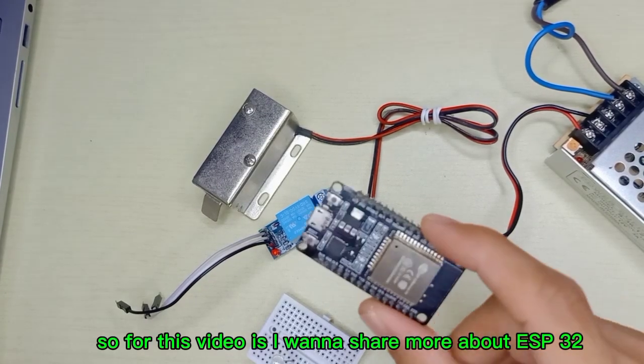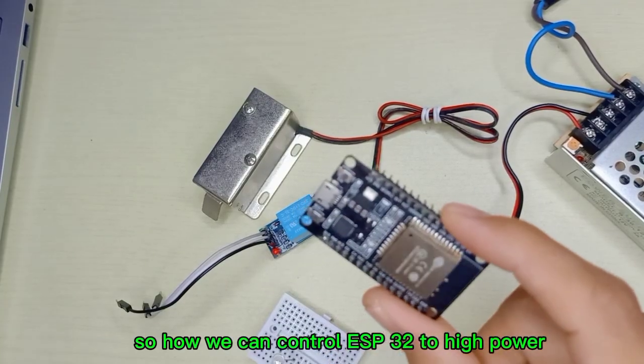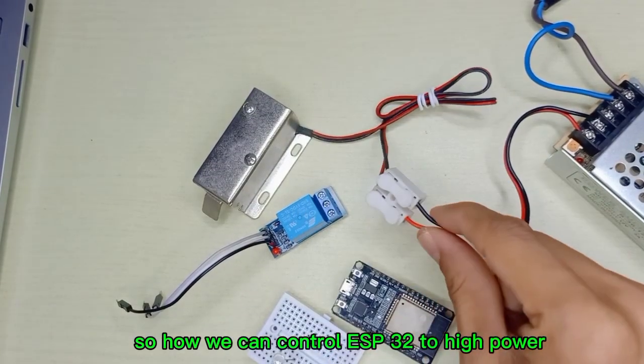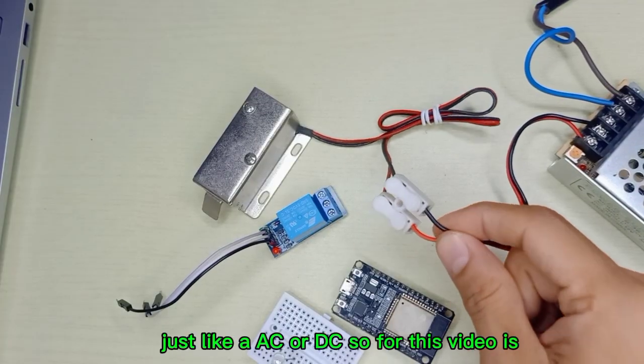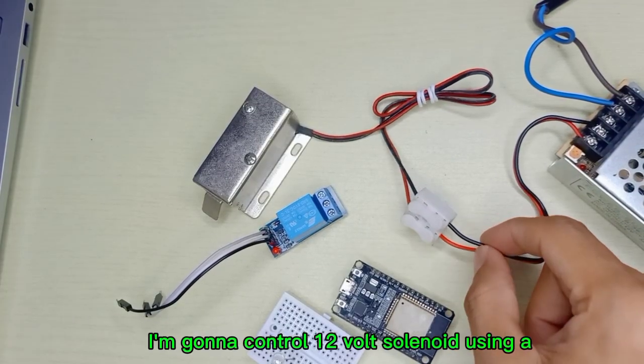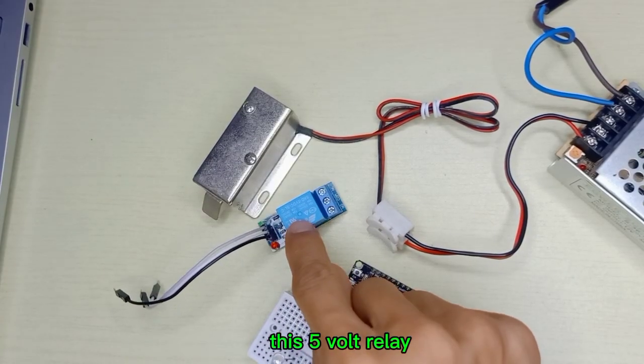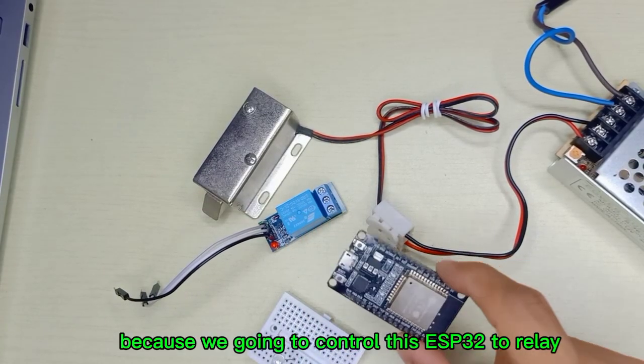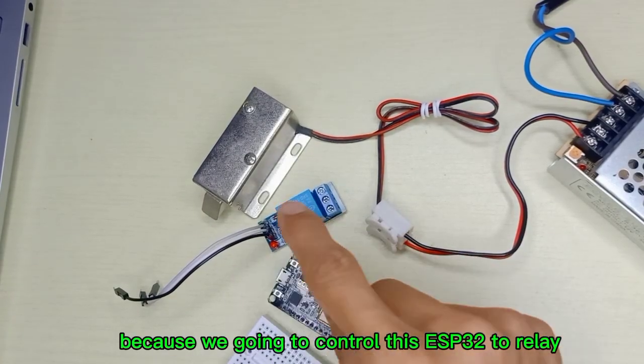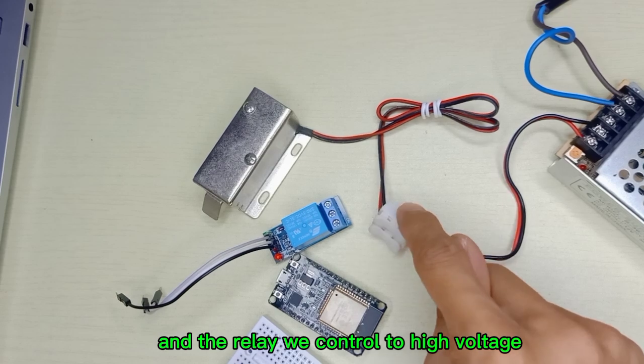For this video I want to share more about ESP32 and how we can control ESP32 to high power devices like AC or DC. I'm going to control a 12 volt solenoid using this 5 volt relay. We're going to control the ESP32 to relay and the relay controls the high voltage.